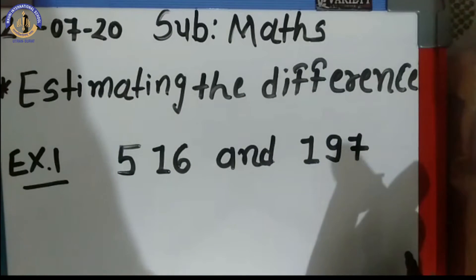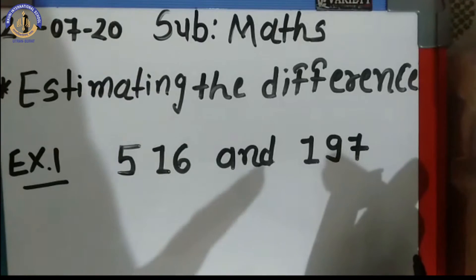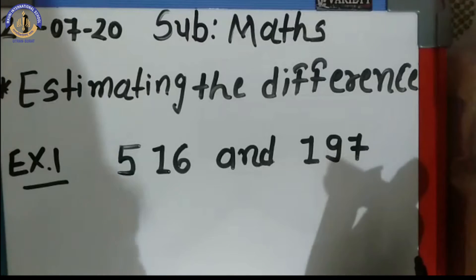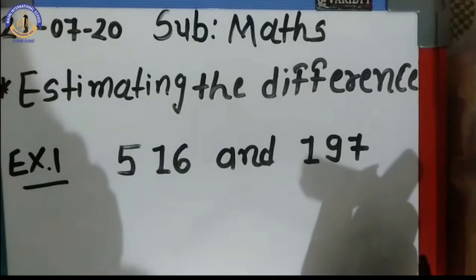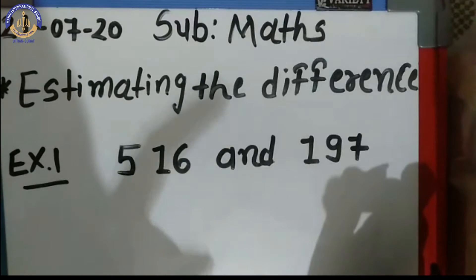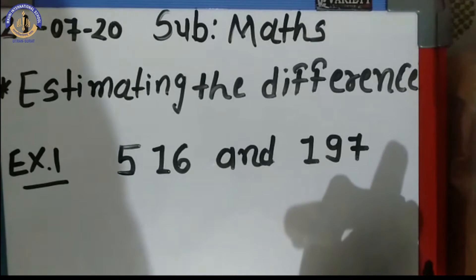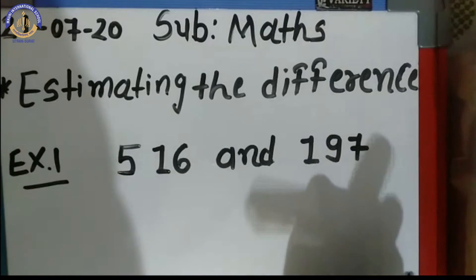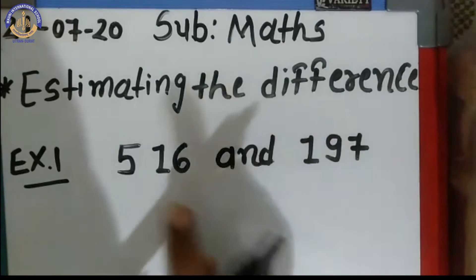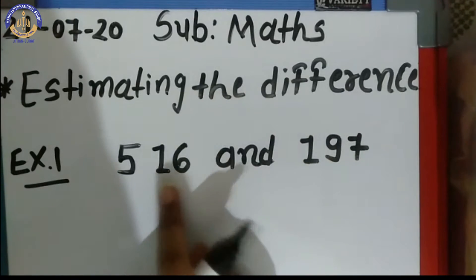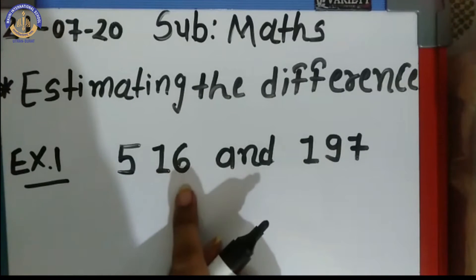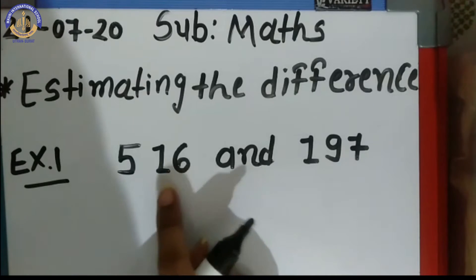So, what do we have to do for estimating the difference? First of all, we have to round off the numbers. Our first step is to round off the numbers to estimate their difference. If we want to find the estimated difference, we have to round off the numbers. So, 516 — we have to round it to the nearest 100. In 100, which place do we check? We check the tens place.